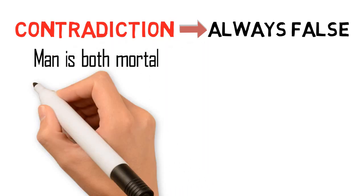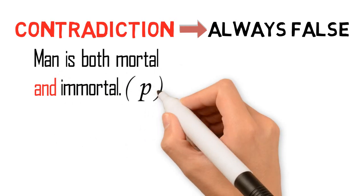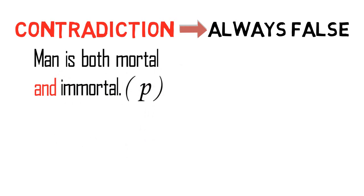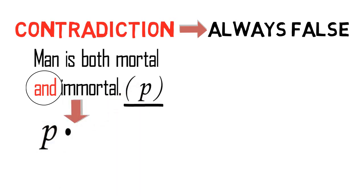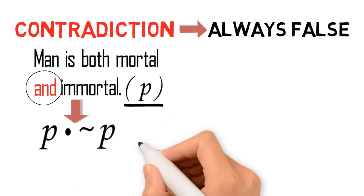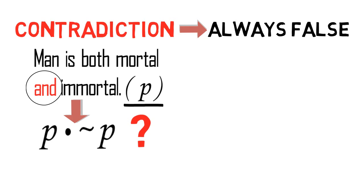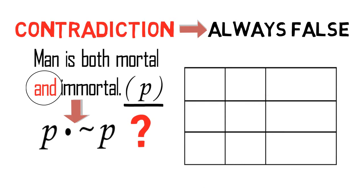Let's consider this example: Man is both mortal and immortal — P. Obviously, this proposition is a conjunction, yet both conjuncts can be represented by the variable P. Hence, the proposition is symbolized as P and not P. Now, in what sense is this proposition always false? Let me use again a truth table to prove this point.